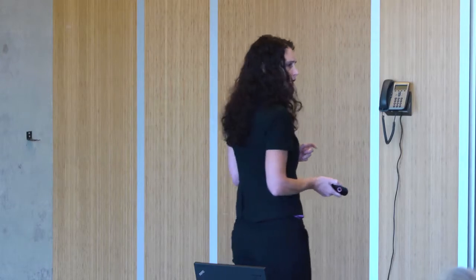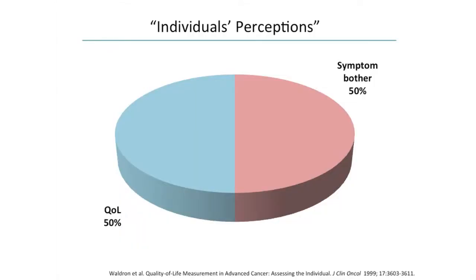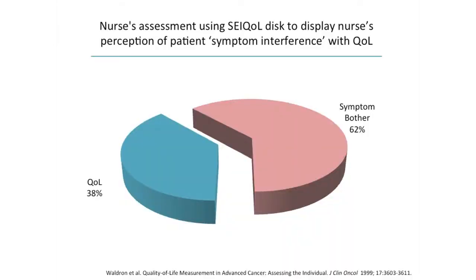This is one individual patient — a person who is at the end of life, an end-stage oncology patient with cancer, really within the last two or three months of their life. In this particular study, the researchers asked different people to weigh in on how much they thought the person's cancer and symptoms were impacting on their life quality. This is the nurse's perception: the nurse thought that about 62% of this person's quality of life pie was being impacted by the symptoms of the condition, leaving about 38% of the pie remaining.